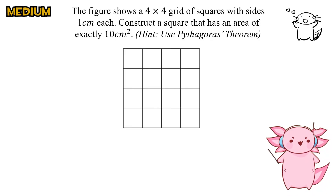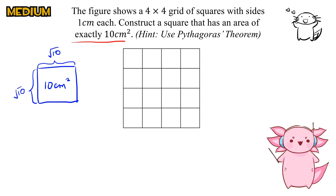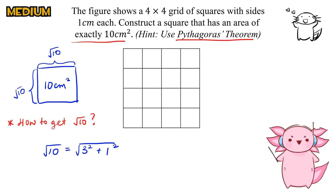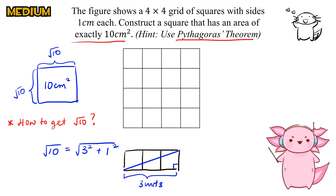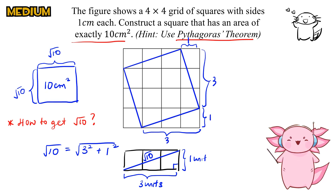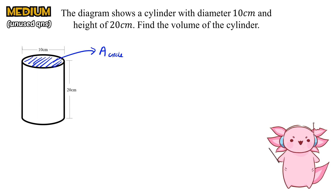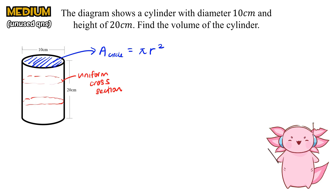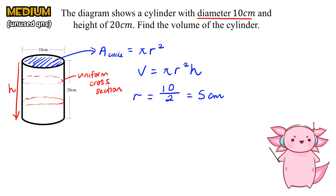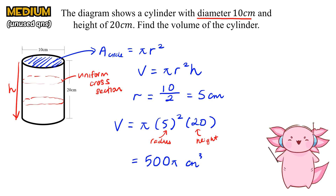This is the most interesting and my favourite question. Since we have to draw a square with an area of 10, the side length must be square root of 10. Using Pythagoras theorem, we figure out that √(3² + 1²) equals √10. So the side length must be 3 units in one direction and 1 unit in another direction. Drawing it out in a corner and repeating the same pattern, we get a slanted square of exactly 10 cm². For the cylinder volume: the area of the circle is πr². Since the diameter is 10 cm, radius is 5 cm. So π times 5² times height 20 gives a final answer of 500π cm³.